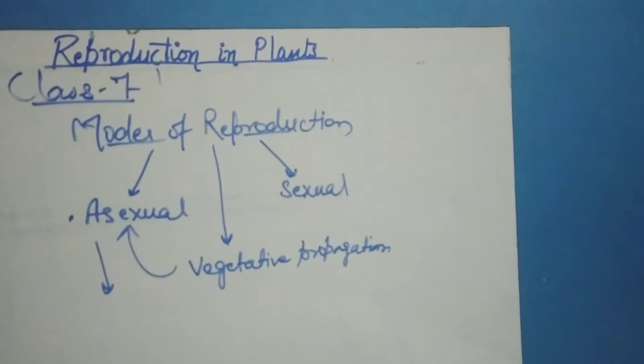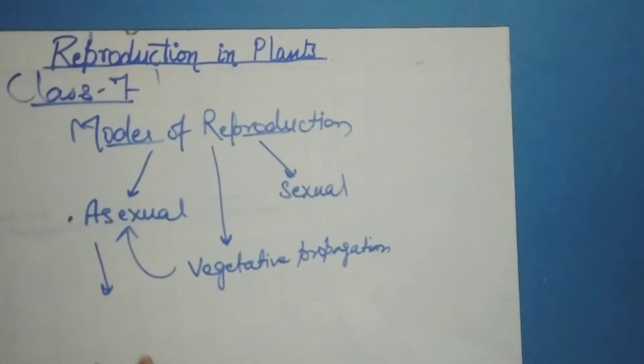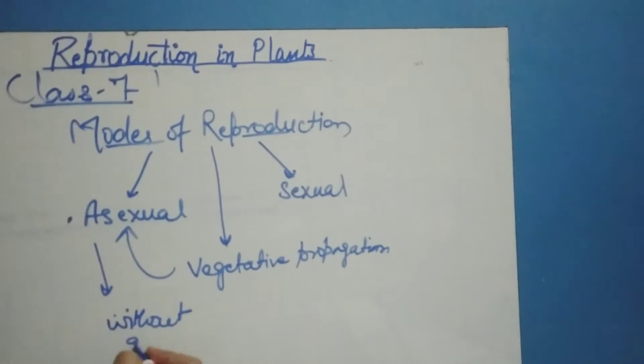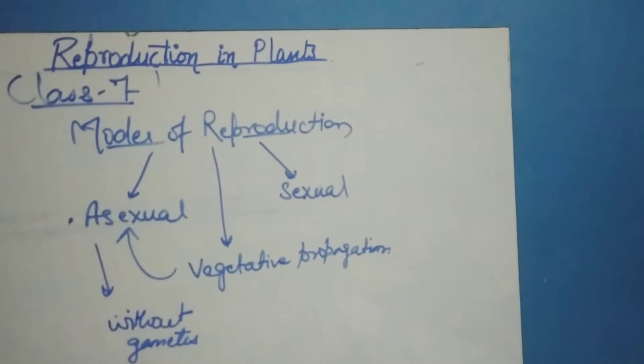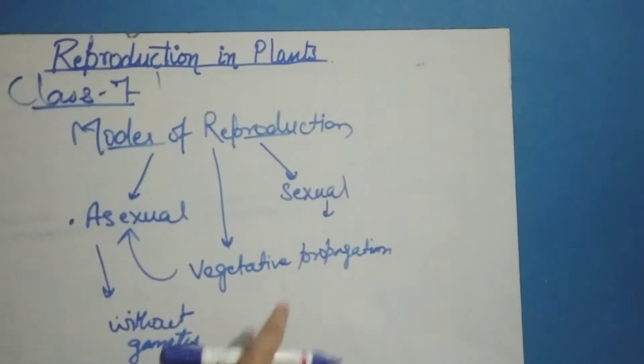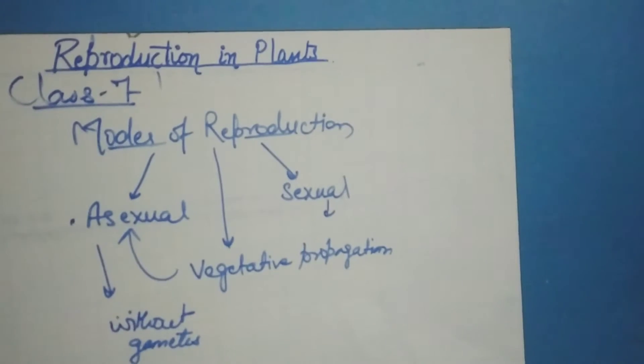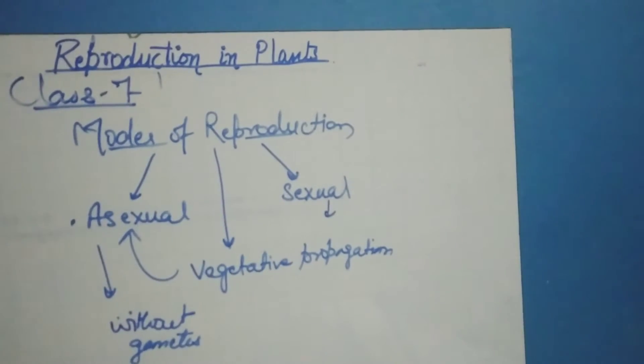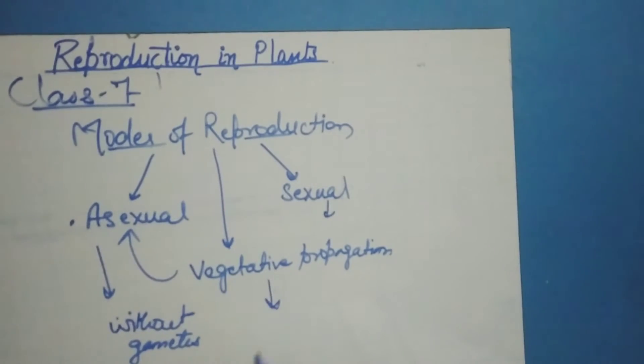Asexual reproduction and sexual reproduction. Asexual reproduction involves simple division of plant body into two or more plants without gametes. Sexual reproduction is reproduction which takes place by the formation of gametes. In this, two parents are needed to give rise to a new individual.